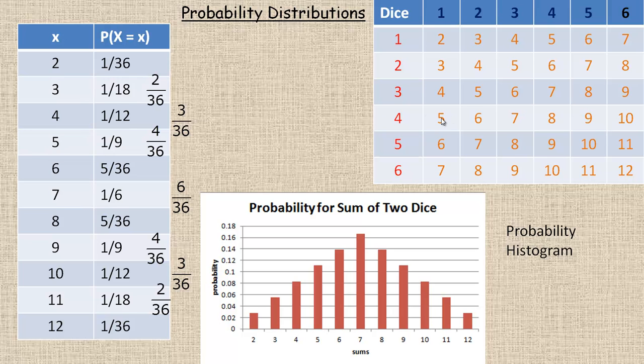The sum of five, if you look here, one, two, three, four ways it can occur. So four chances in 36 reduces to 1/9.